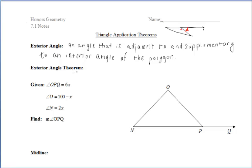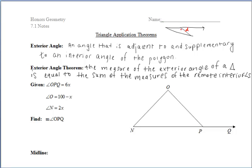That's our definition. This exterior angle theorem is extremely important because it takes the inequality that we've discussed in the past a little bit further. It states that the measure of an exterior angle of a triangle is equal to the sum of the measures of the remote interior angles. This idea can be proved using the fact that in any triangle, all three angles must add up to 180 degrees, as well as using supplementary angles.